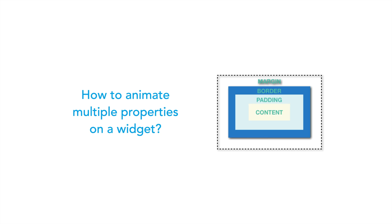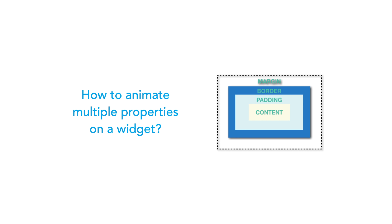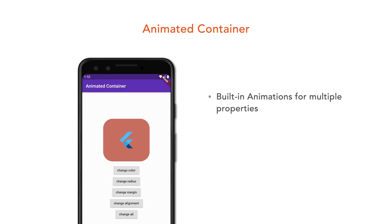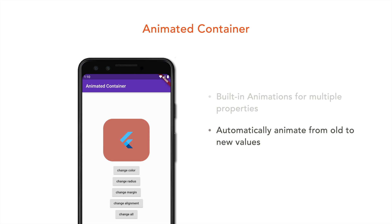So how do we animate multiple properties like margin, border, and padding on a single widget in Flutter? We can do it using AnimatedContainer. It provides built-in animations for multiple properties — whenever you change to a new value on any property, it will automatically animate to the new value.